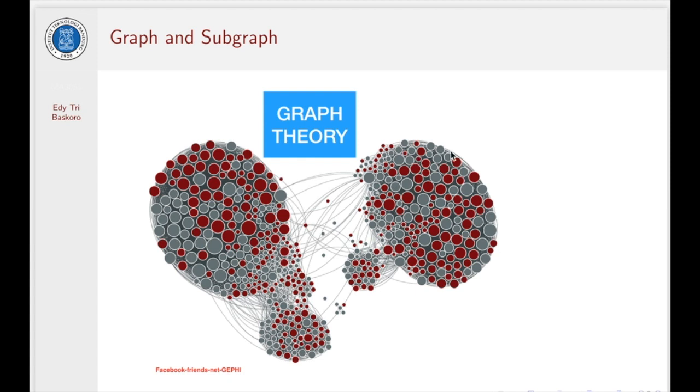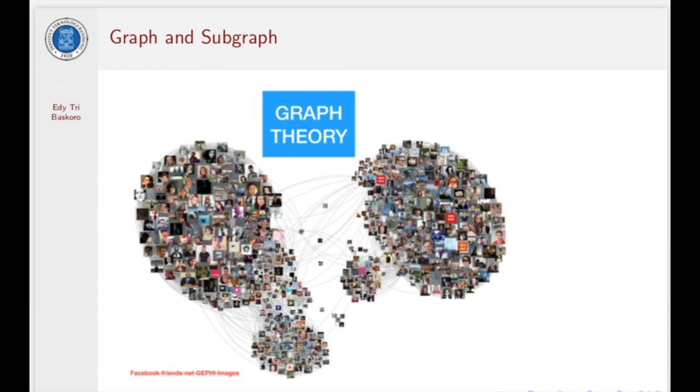With the graph, we could also analyze the relationships between people if the nodes represent people and the edges represent their relations in the networks. So, from several examples above, we could see that every network in any kind is just simply a graph.